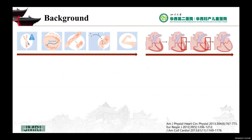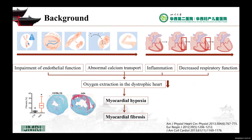Duchenne Muscular Dystrophy, caused by absent dystrophin protein, is an X-linked systemic muscle degenerative disease. Cardiomyopathy has become the major cause of death in DMD patients. Previous studies have demonstrated that impairment of endothelial function, abnormal calcium transport, inflammation, and decreased respiratory function may lead to declines in oxygen extraction in the dystrophic heart and further develop into myocardial hypoxia.